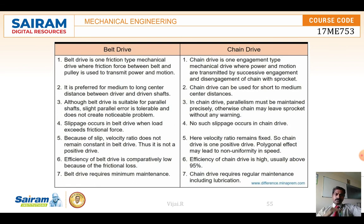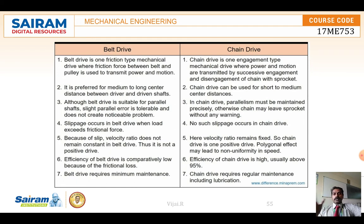Belt drives may slip under overload, but chain drives do not slip, maintaining a fixed velocity ratio. Chain drives are more efficient than belt drives. However, belt drives require minimal maintenance, whereas chain drives require maximum maintenance including regular lubrication. Without proper lubrication, a chain drive will rust and break quickly.